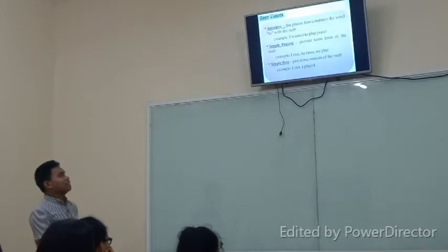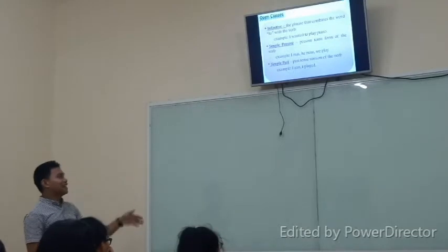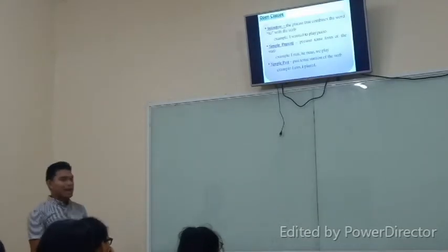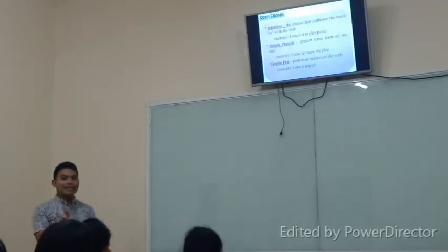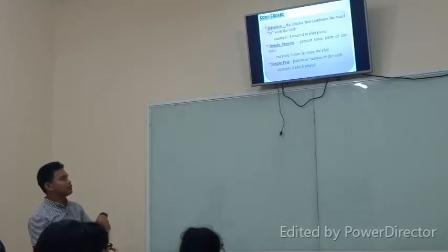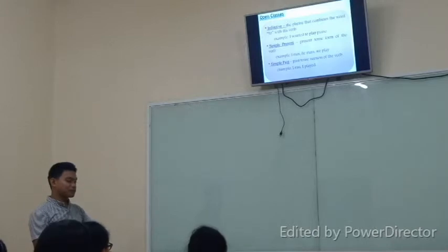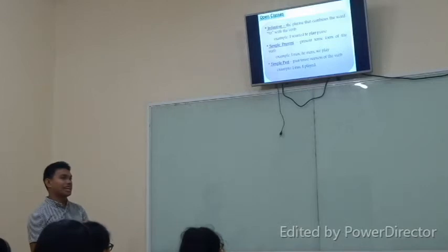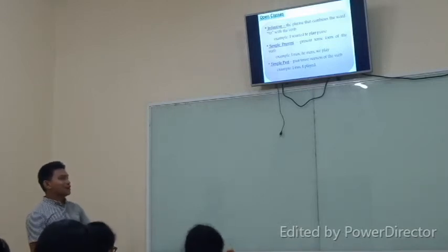Simple present is the present tense form of the verb — for example: I run, he runs, we play. The present tense also depends on the noun you are using it with. Next is simple past — the past tense version of the verb. For most verbs, we usually add '-ed' for the past tense. And sometimes there are irregular verbs where we rearrange the letters entirely.